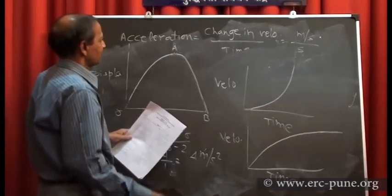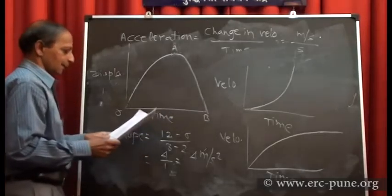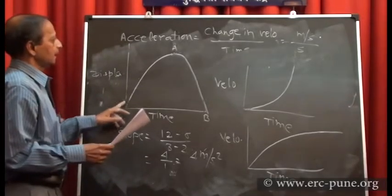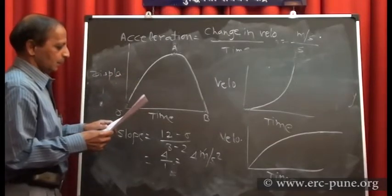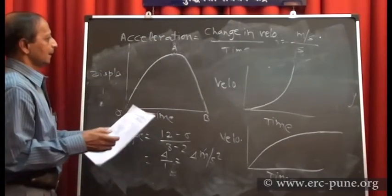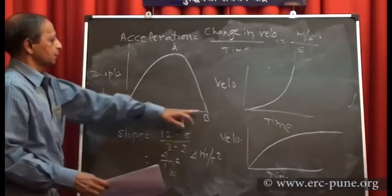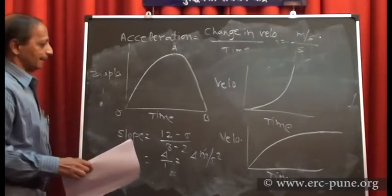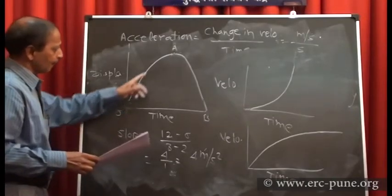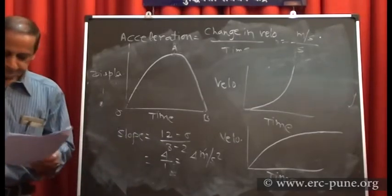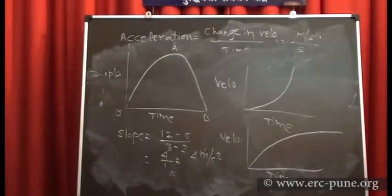The displacement-time graph for a body thrown vertically upward shows velocity decreasing from O to A, becoming zero for a fraction of a second at A, then the body comes back and reaches your hand at point B where displacement becomes zero again. From O to B the velocity goes on increasing on the return journey.